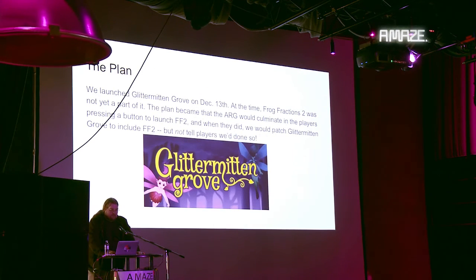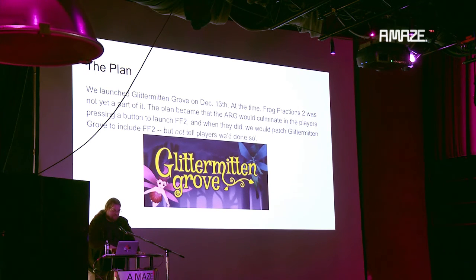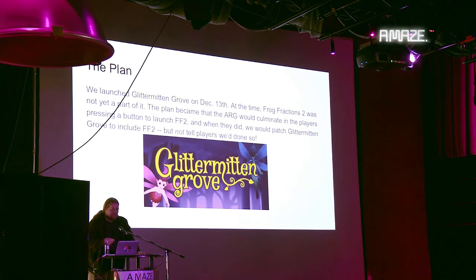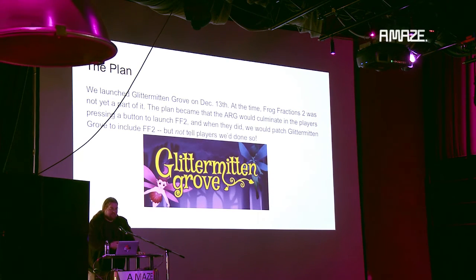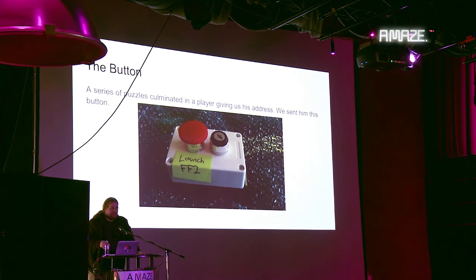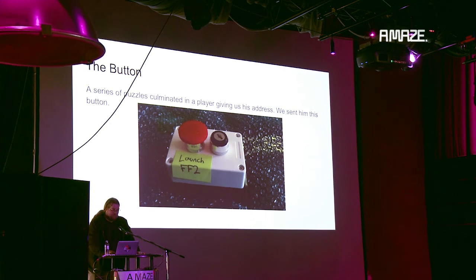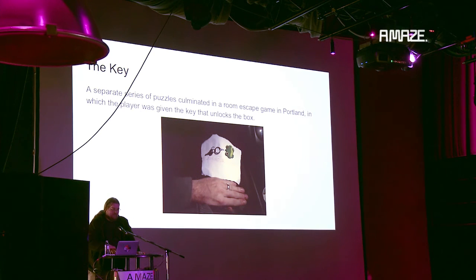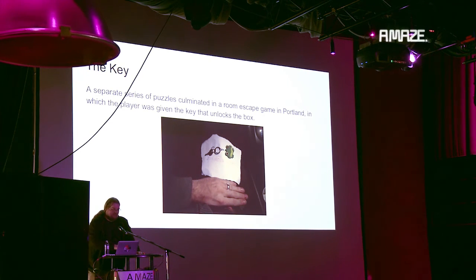Frog Fractions 2 eventually became part of a game called Glitter Mitten Grove. We launched it mid-December without Frog Fractions 2 in it — just the fairy city-building game. The plan was that when players solved the last puzzle and finished the ARG, we would patch the game to include Frog Fractions 2. We divided the final puzzles into two forks: one fork ended with a player giving us his address and us sending him the button; the other fork led players to a room escape game in Portland where they got a key. They didn't know until they had both items that they needed to be together.